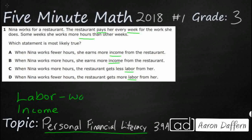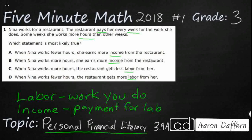Labor is work you do. So when Nina is working for her restaurant — whether she's cooking food, working the cashier, or waiting tables — she's not just standing around, she's doing work. So she is getting paid for the work she's done in the form of income. Income is payment for labor. Labor is work you do for somebody else — a corporation, maybe someone from your family — and they pay you income, which simply means the amount of money you get.